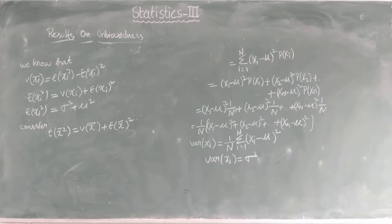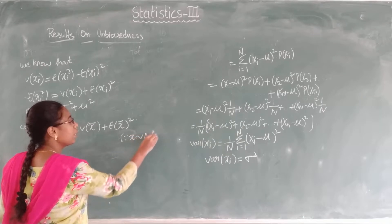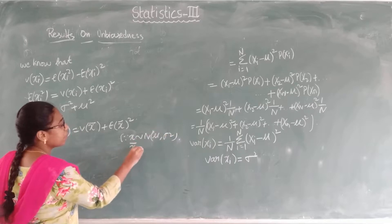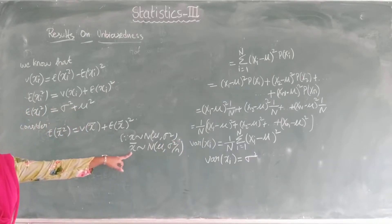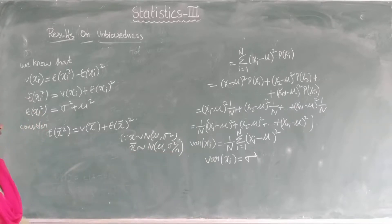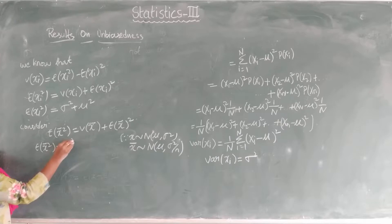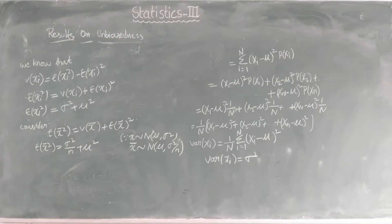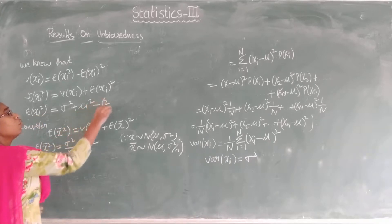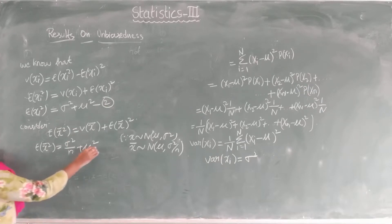We know that if x follows normal with mean mu and variance sigma², then by the central limit theorem, x̄ follows normal with mean mu and variance sigma²/n. So expectation of x̄ = mu, and variance of x̄ = sigma²/n. Therefore expectation of x̄² equals sigma²/n plus mu². Keep this as equation 2, and expectation of xᵢ² = sigma² + mu² as equation 3.